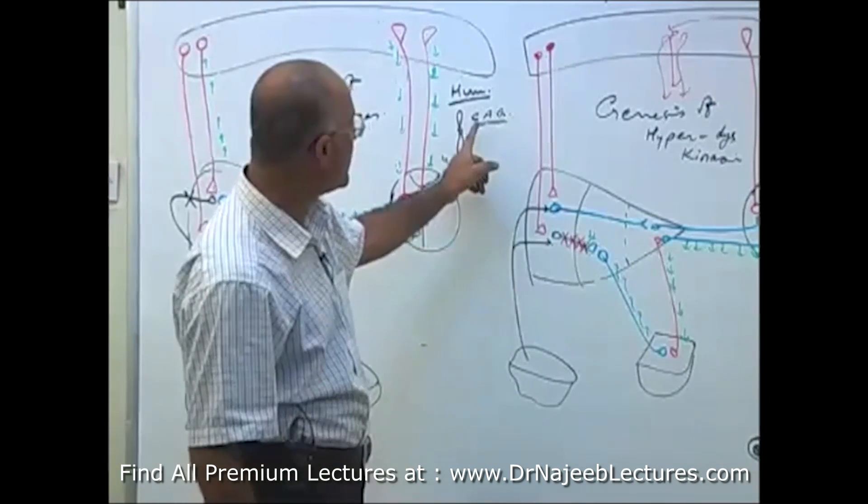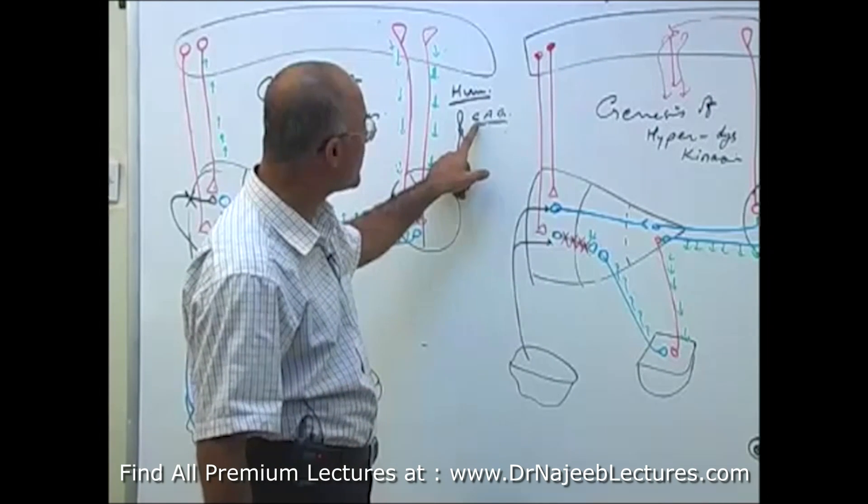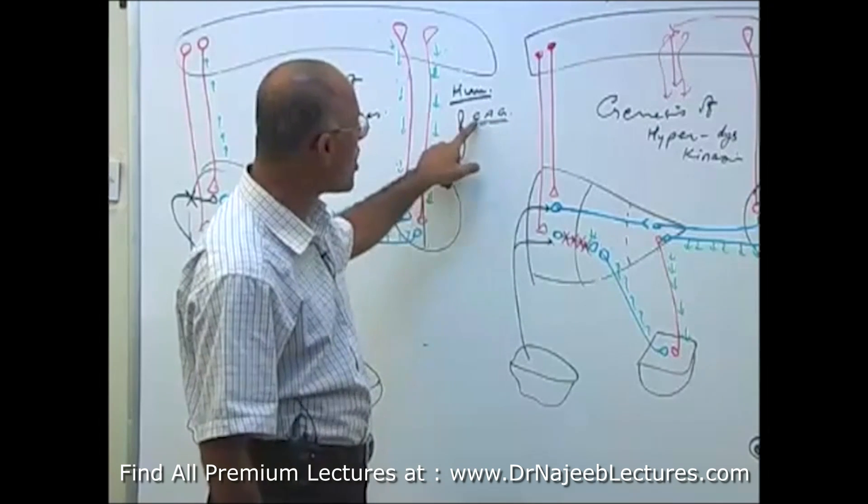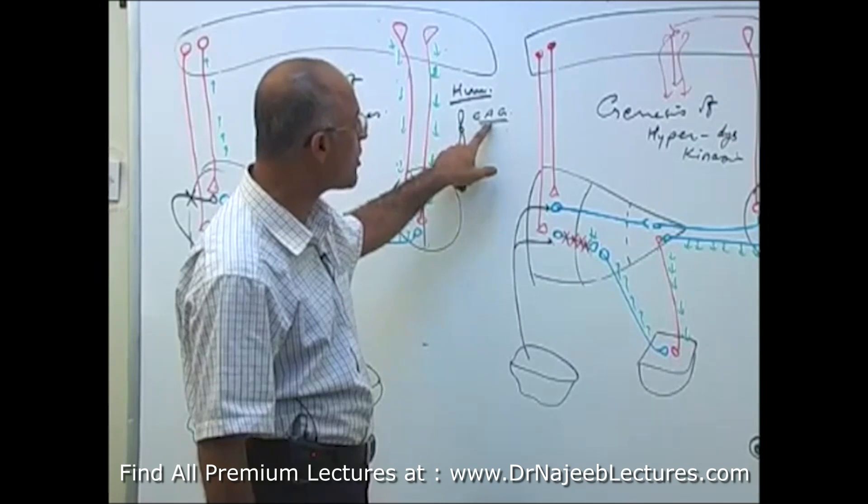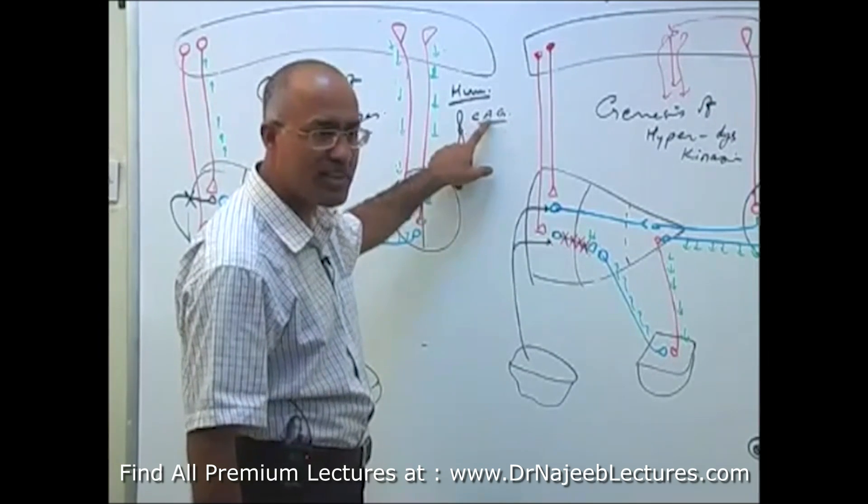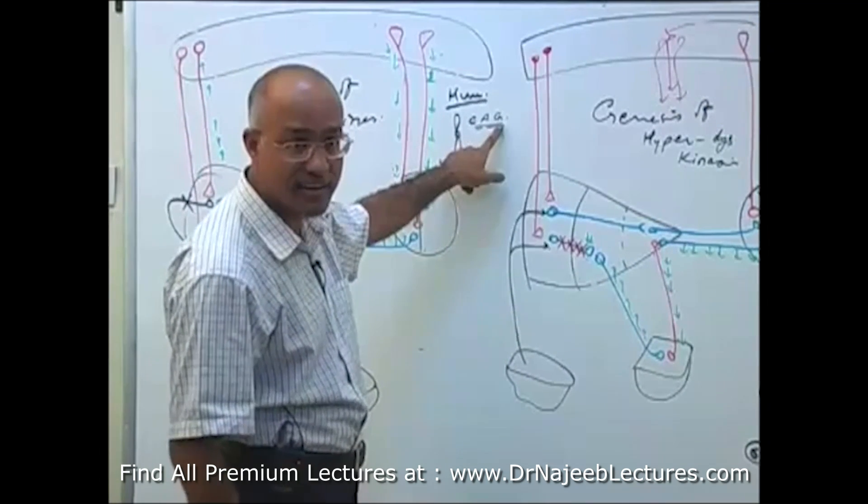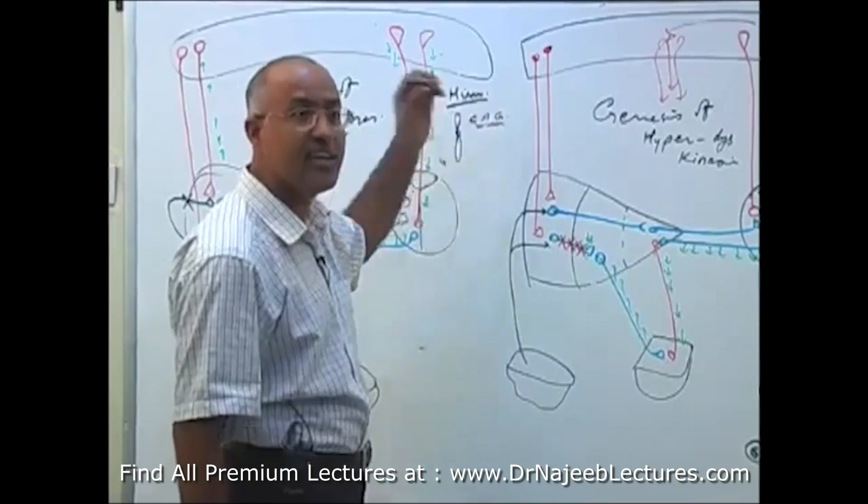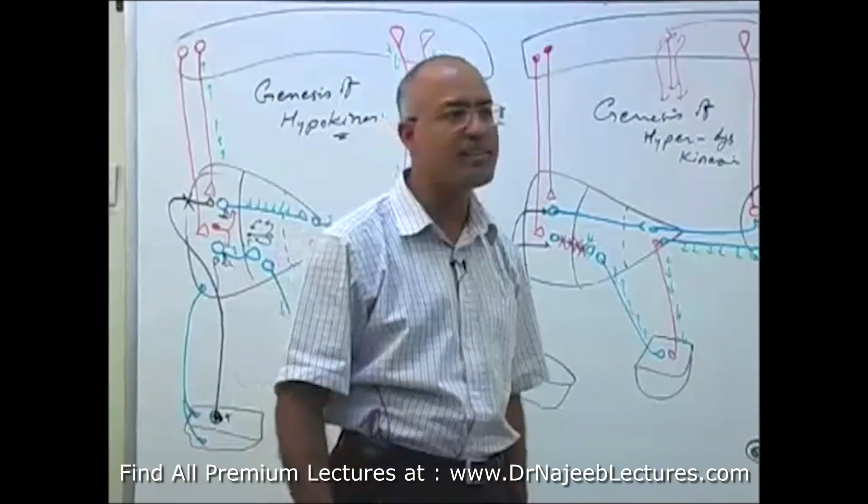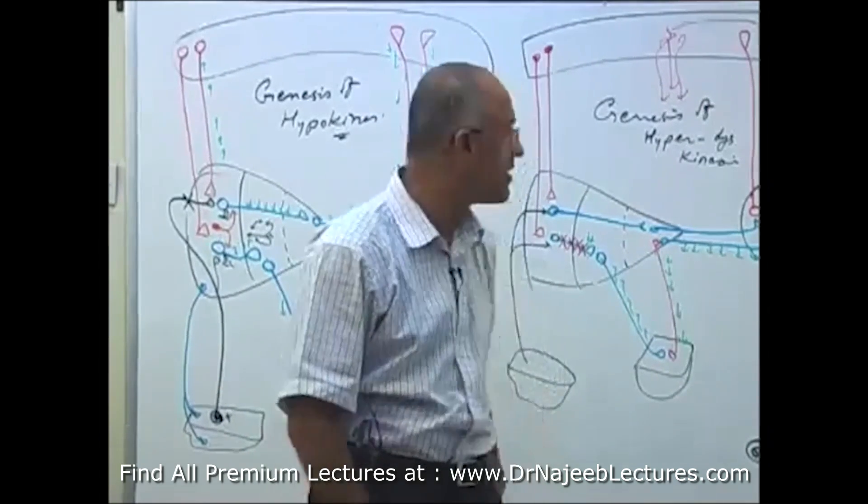So Huntington's chorea is inherited disorder, autosomal dominant, related with trinucleotide repeat amplification. Disease get worse generation after generation, and the disease appears at younger age, generation after generation. Because trinucleotide repeat over-amplify during gametogenesis. And trinucleotide repeat, which amplifies, they consist of cytosine, adenine and guanine. But you can remember, caudate nucleus having less acetylcholine, and having less GABA. Cholinergic and GABAergic neurons are damaged. Patient has classically, abnormal motor choreiform movement, with that there is depression and dementia.